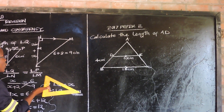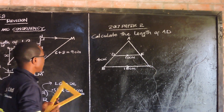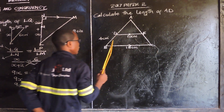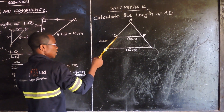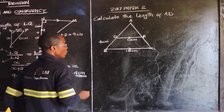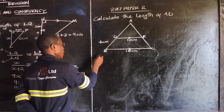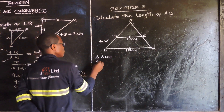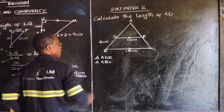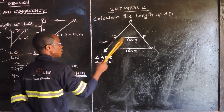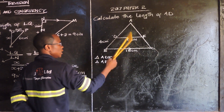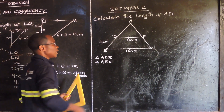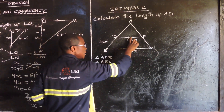Now let us look at 2017. They want us to calculate the length of AD — that is, find the distance from A to D. Triangle ADE and triangle ABC are similar. So it's like you have a small triangle and a big triangle. They are similar, and the lines DE and BC are parallel.